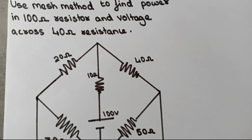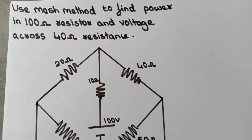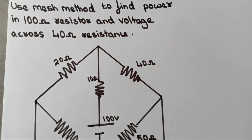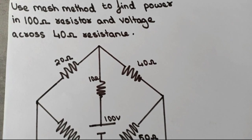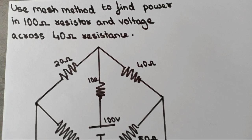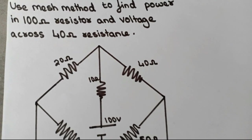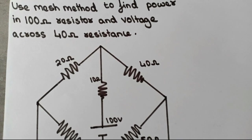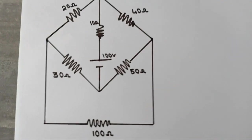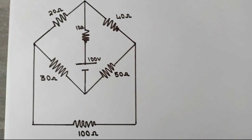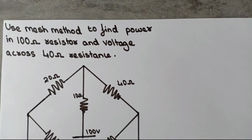Hey everyone, welcome back to my channel, this is Aksharova. Today in my video we'll be solving some difficult problems using the mesh method. The question is: use the mesh method to find the power in the 100 ohm resistor and voltage across the 10 ohm resistance. Here is the circuit.